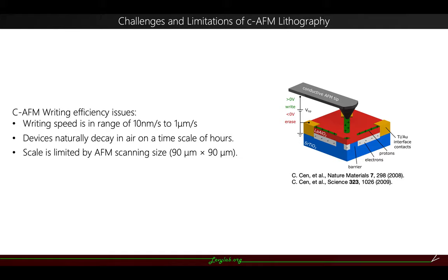But at the same time, we are also facing the challenges and limitations of the conductive AFM lithography for this technique. So I summarized these as writing efficiency issues. The writing speed of conductive AFM lithography is in the range of 10 nanometers per second to 1 micrometer per second. At the same time,